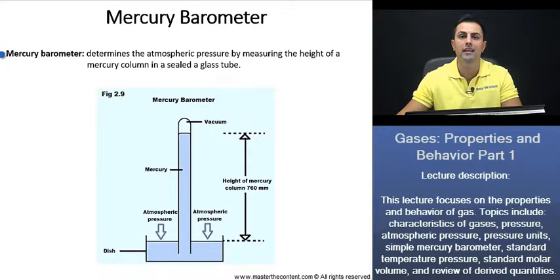Mercury barometer. Let's begin here with a definition. Mercury barometer determines the atmospheric pressure by measuring the height of a mercury column in a sealed glass tube.